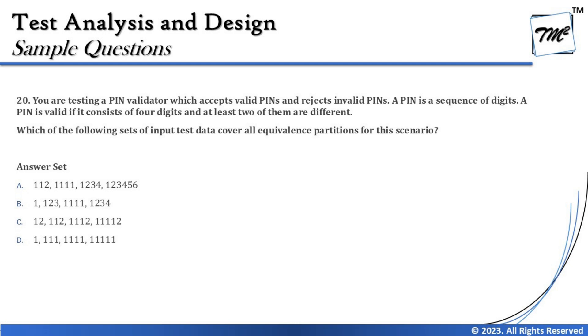Question number 20 is about equivalence partitioning and is a little tricky, so pay attention. You are testing a PIN validator which accepts valid pins and rejects invalid ones. A PIN is a sequence of digits only. A PIN is valid if it consists of four digits and at least two of them are different. So it's a four-digit value where all characters are digits, but the constraint is it must be exactly four digits and any two digits should be different — you cannot feed in 1, 1, 1, 1. Now we need to create partitions first, before looking at options.